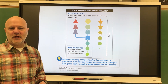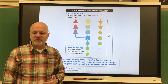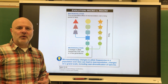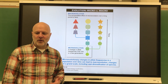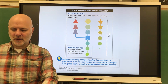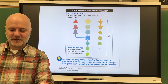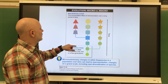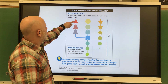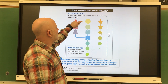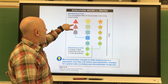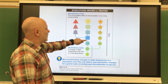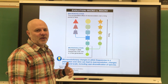Macro evolution refers to the large scale products of evolutionary change involving the origins of new groups of organisms. Macro evolution is looking at these end products, but how we get to those end products is all through micro evolutionary processes.